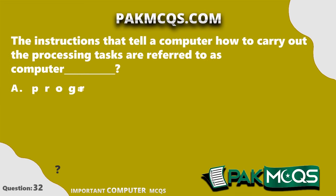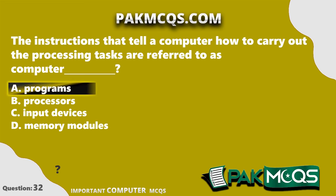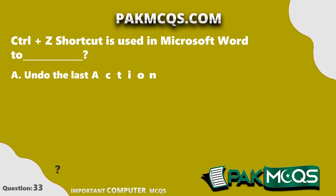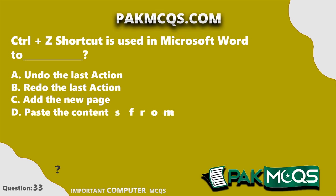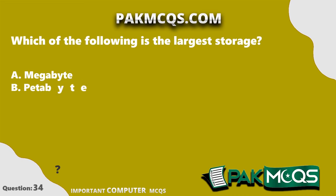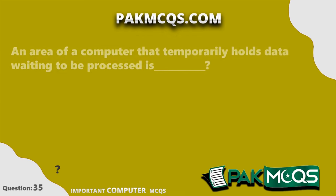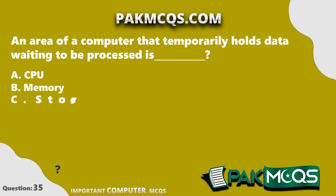The instructions that tell a computer how to carry out processing tasks are referred to as computer programs. The Control+Z shortcut is used in Microsoft Word to undo the last action. The largest storage unit among the options is a petabyte. An area of a computer that temporarily holds data waiting to be processed is called memory.